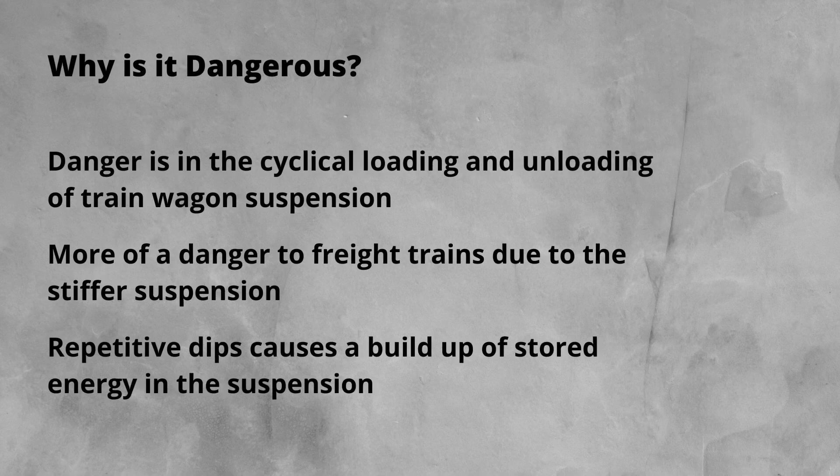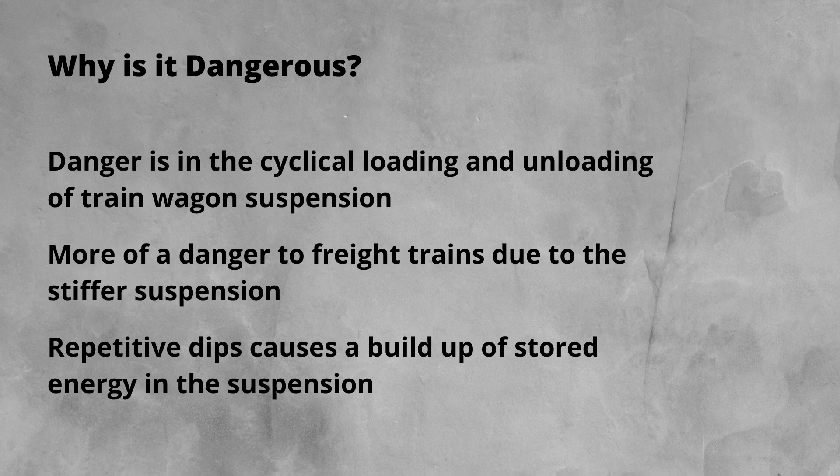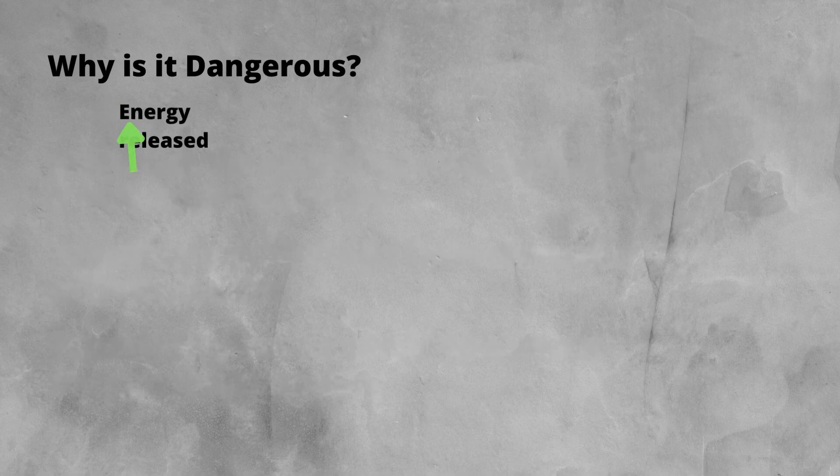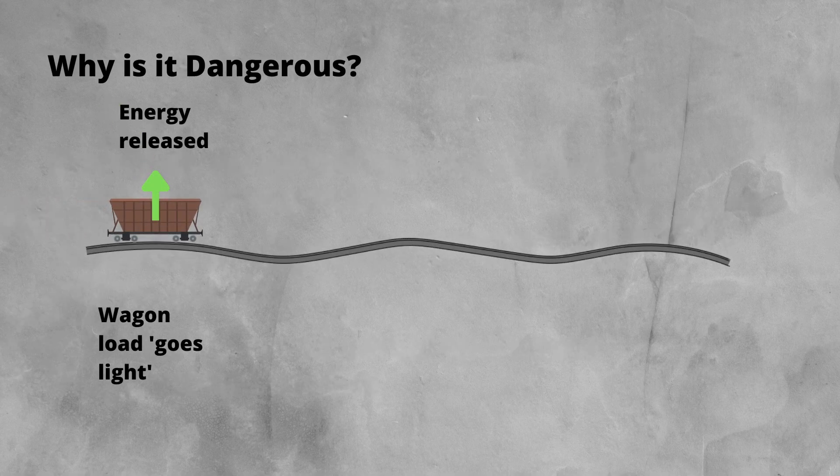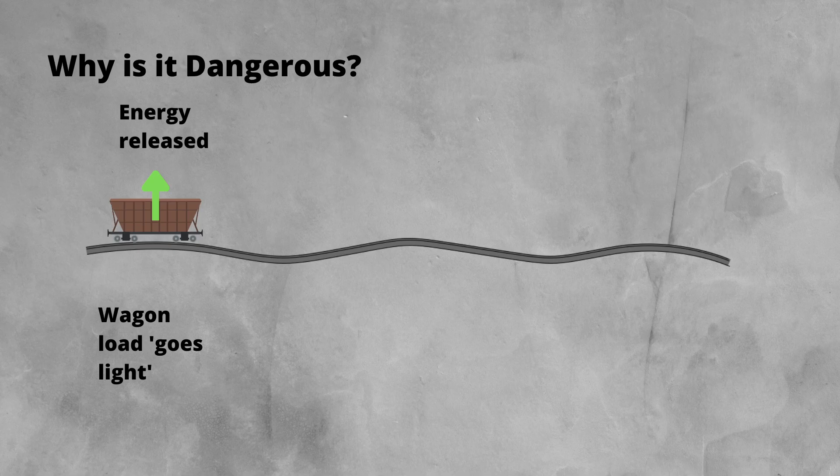The repetitive pattern of dips causes a build-up of stored energy in the suspension of the train wagons. This stored energy needs to be released. The track underneath is a solid construction, so the only way for the energy to be released is upwards, lifting the wagons. This causes it to go light for a period of time, with minimal load on the wheels.